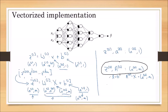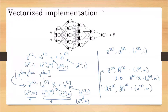When L equals 0, it indicates the input layer, so the activation units are simply our input features. As already discussed, ZL and AL are nL×m matrices, and similarly DZ and DA are also nL×m matrices, where DZ is the differentiation of the cost function with respect to Z and DA is the differentiation of the cost function with respect to A.